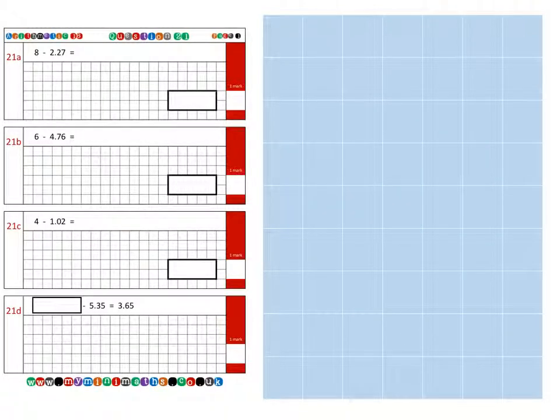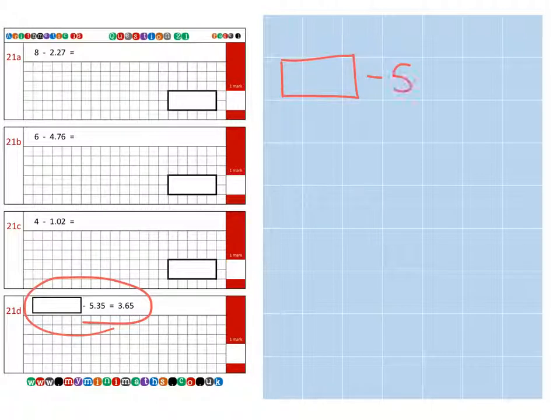And for the final question 21d we have a missing number. So if I rewrite the question, we have something subtract 5.35 and that equals 3.65. Now I'm going to work out what this missing number is. So if we use the inverse operation which is just using the opposite operation, and the opposite operation for subtract is to add.